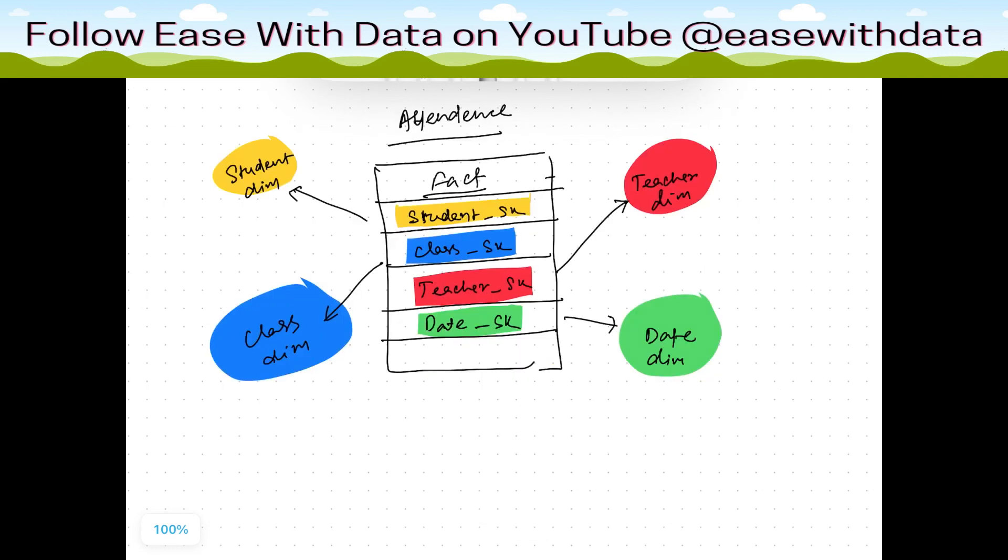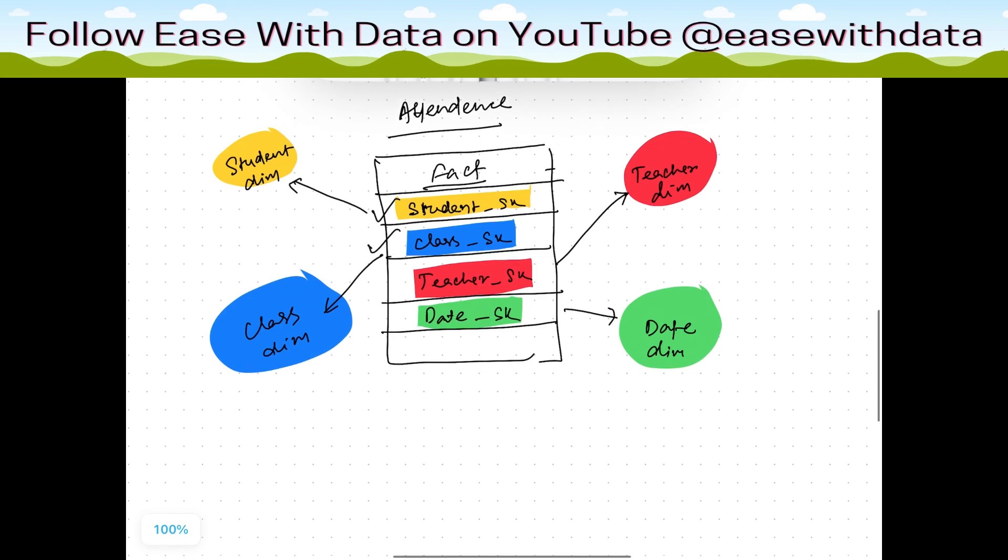For a factless fact, consider we have an attendance fact where we have student, class, teacher, and date dimensions wherein the attendance are recorded into the fact table. Now if you see the current example, you will find there are no measures in this fact. Only the surrogate keys are populated. The student surrogate key is populated from student dimension, the class surrogate key from class, the teacher surrogate key from teacher dimension, and date. There is no measure in this fact. That is why this fact is called factless fact.